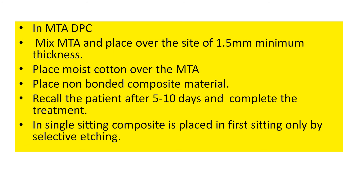In the MTA direct pulp capping technique, mix MTA and place it over the exposure site. The thickness of MTA placed over the pulpal exposure site should be at least 1.5 mm — that is the minimum required thickness. Then place moist cotton over the MTA. This is because MTA requires a moist environment for setting, as MTA is a hydrophilic material that needs moisture to set.